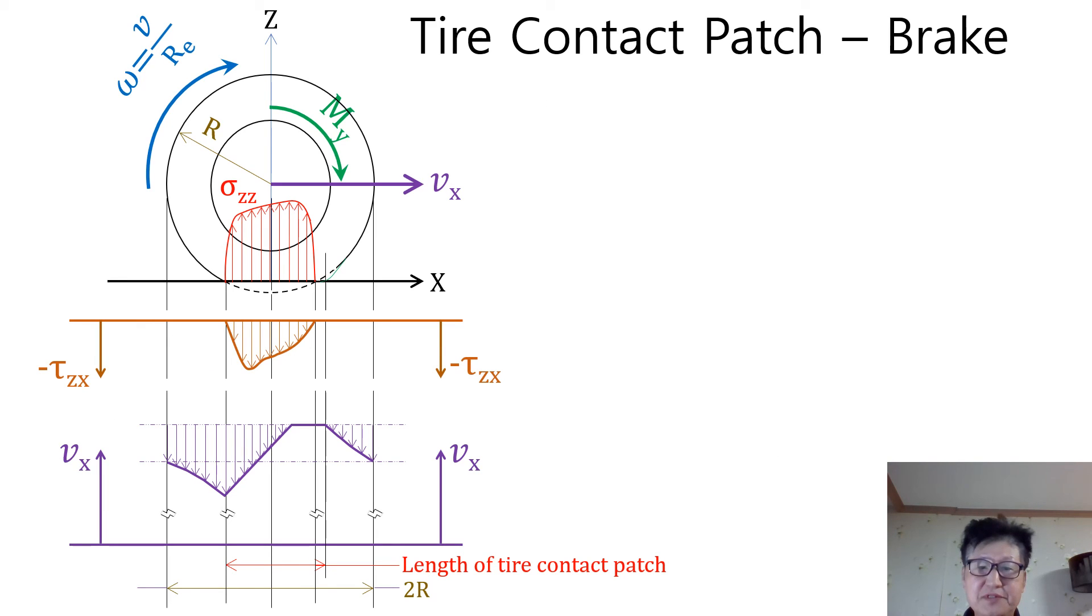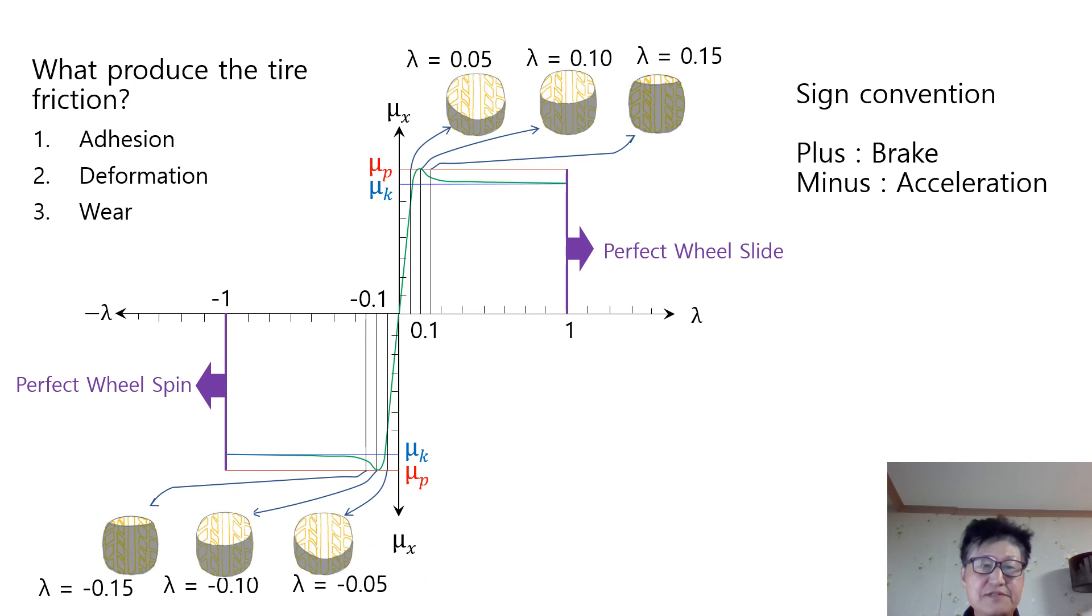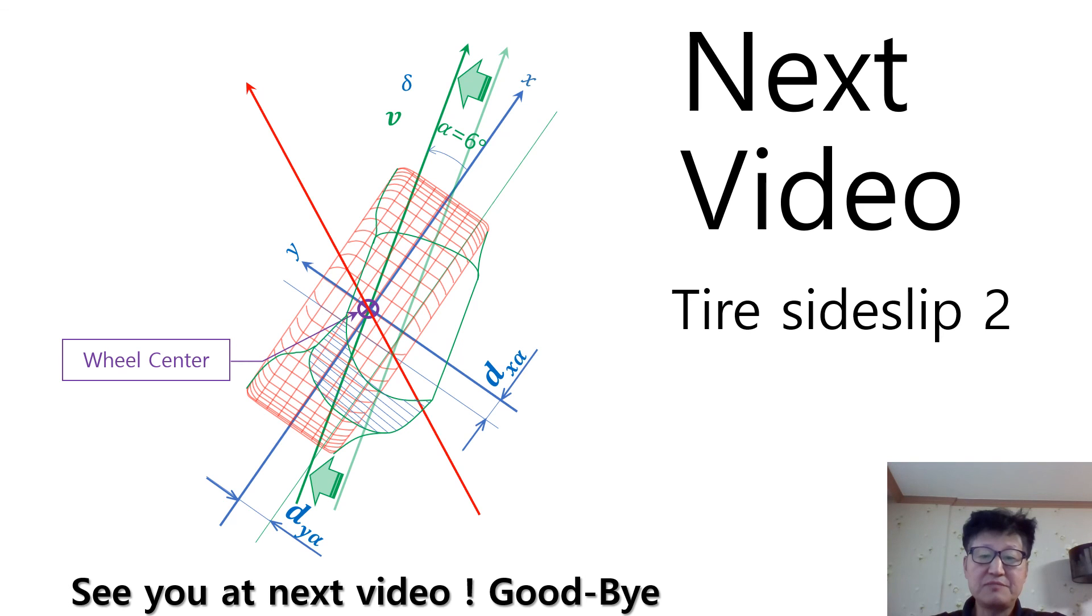If you watched the previous videos, you can easily understand the upcoming videos. I explained the vertical and shear stress for the rolling tires under both braking and acceleration. Recently, I explained the friction coefficient in terms of slip ratio for braking and acceleration. In the next video, I will explain the variation of tire contact patch depending on side slip angle values. See you in the next video. Goodbye guys!